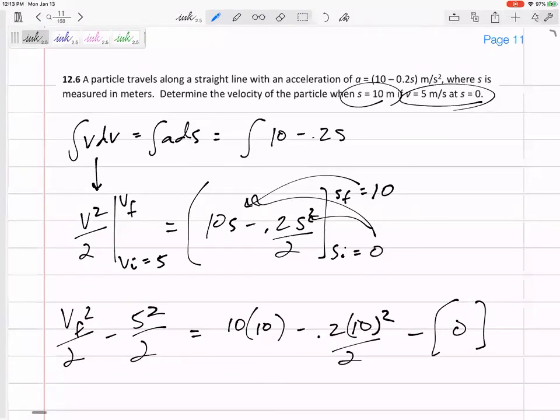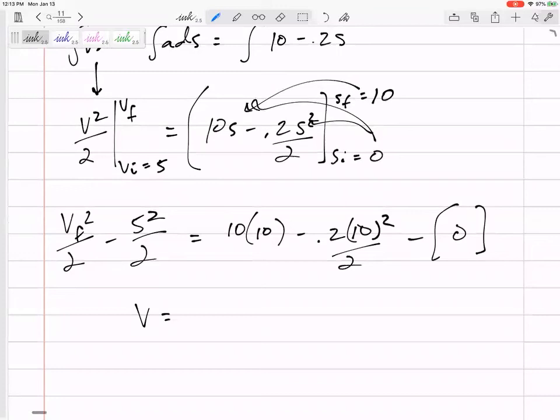And so there's our equation for velocity. I can just solve. Punch that into my calculator. 14.3 meters per second. 14.3 meters per second.